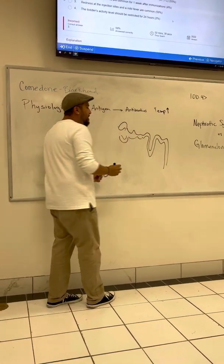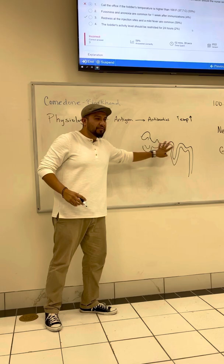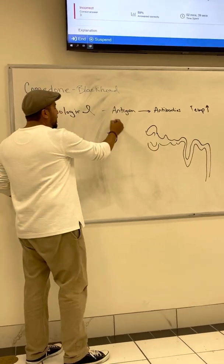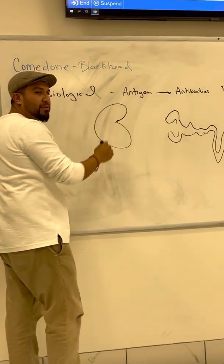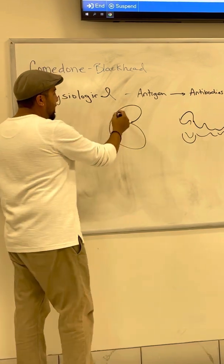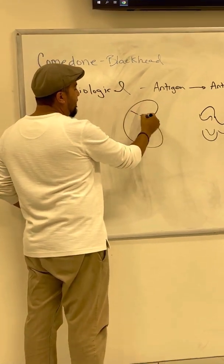So when we talk about the glomeruli, we're talking about the bundle. This is a nephron, and our kidneys have a million of those nephrons per kidney. They're microscopic, they're very tiny, and they work their way like that.